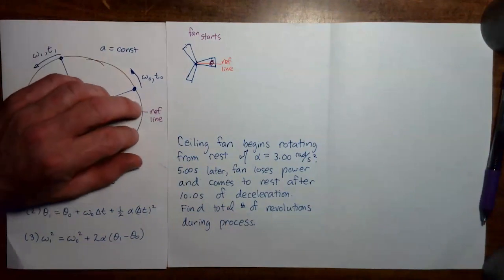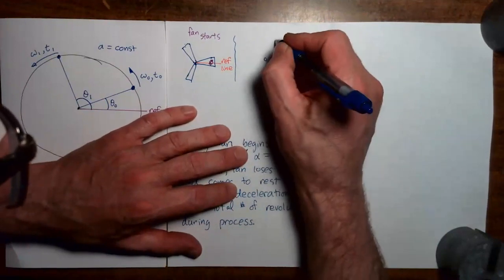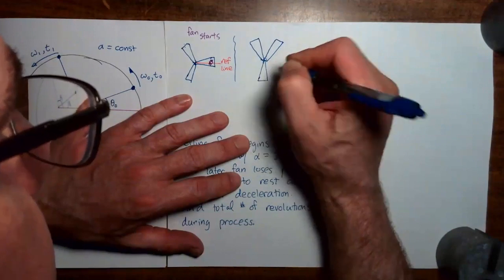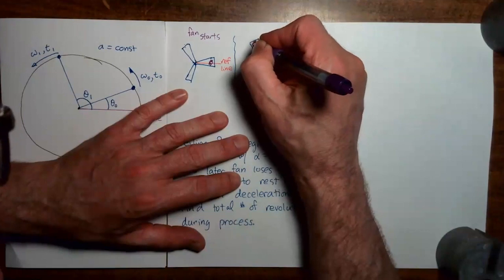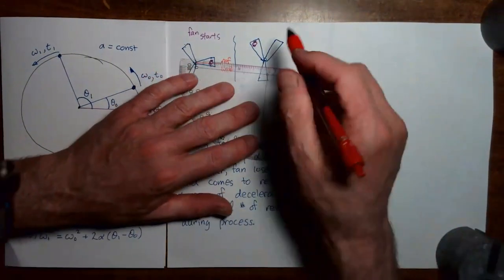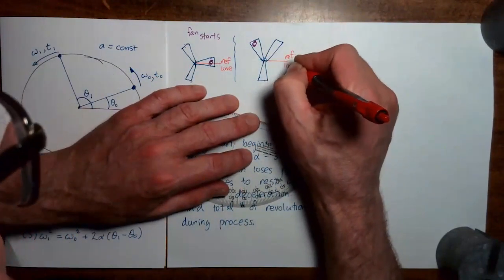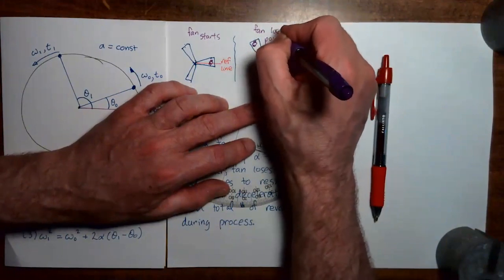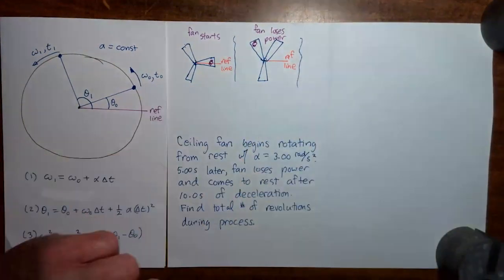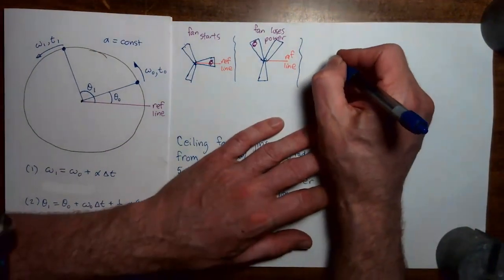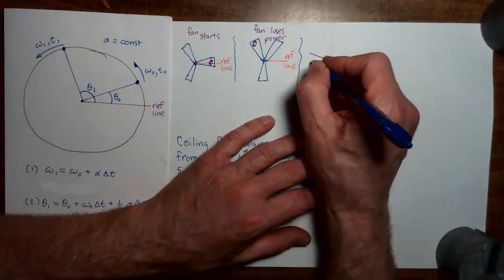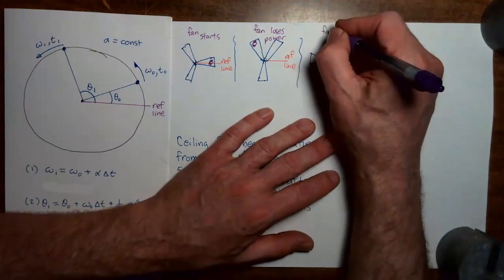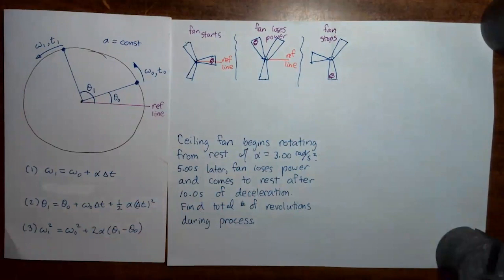Our next moment of interest will be at the moment where the fan loses power — another picture of the ceiling fan with the fan blades and insect in different positions. The reference line stays in place. This is where the fan loses power. The last moment of interest will be when the fan stops completely — another picture of the ceiling fan with the insect in yet another position. This is when the fan stops.